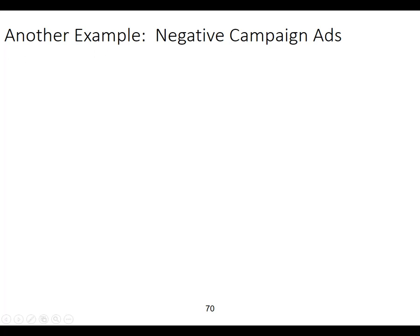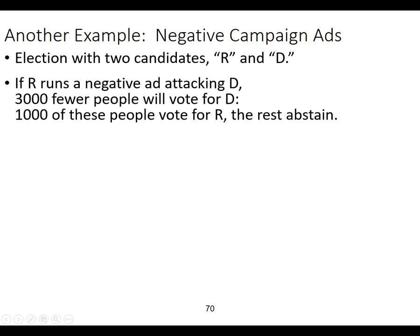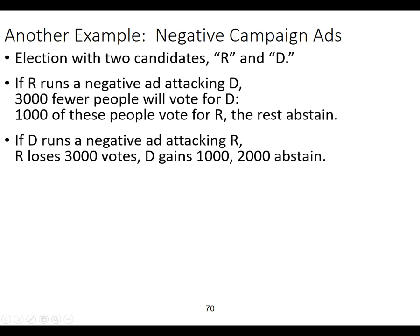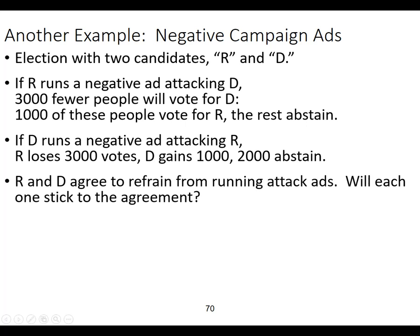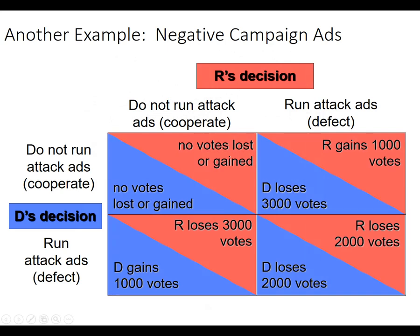This last example is negative campaign ads. Republican and Democrat are going to collude and agree not to run attack ads. If the Republican runs an attack ad and the Democrat doesn't, 3,000 fewer people will vote for the Democrat, 1,000 more will vote for the Republican, and the rest will abstain. The Republican is in red and the Democrat is in blue. If the Republican doesn't run an attack ad, the Democrat can either gain nothing or gain 1,000 votes — so the Democrat runs an attack ad. If the Republican does run an attack ad, the Democrat can lose 3,000 votes or lose 2,000 — so they run an attack ad. The Democrat has a dominant strategy to run an attack ad.